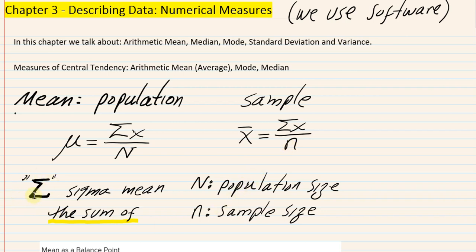There are two sigmas in the Greek alphabet. This sigma is a mathematical operator, and the mere presence of sigma is a command to add — it means the sum of. Anywhere you see this in our formulas, that means the sum of. For most of what we do in this course, we're going to be using software — whether Megastat, Minitab, SAS, SPSS, Excel, or any accessible software. So we won't emphasize formulas as much as interpretation of output.